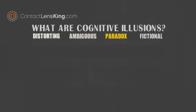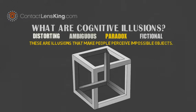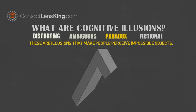The third category is made up of paradox illusions. These are illusions that make people perceive impossible objects. For instance, in this first image, take a look at the rear bottom corner. Or how about the object in this image — does it seem plausible?